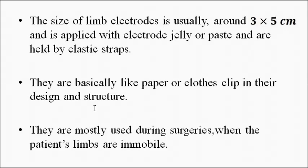Limb electrodes are generally used for monitoring the ECG signal during surgeries. At that time, the patient's limbs — the arms and legs — are immobile because of anesthesia, so there is no problem of motion artifacts. Motion artifacts are unnecessary signals caused by body movements, so the immobility of the limbs during surgery eliminates this issue.